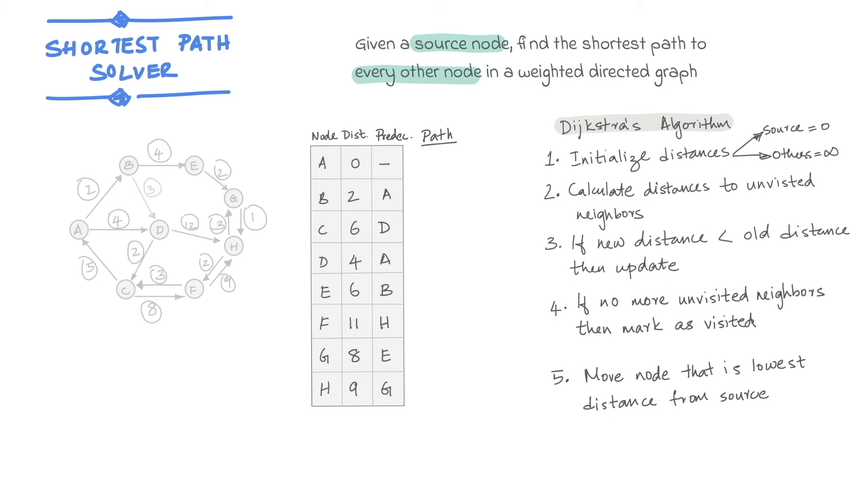So for instance, for the node B, the predecessor is A, which is the starting node. So the path is A followed by B. In the case of C, the predecessor is D, and the predecessor of D is A. So the path is A, D, C. So on and so forth.